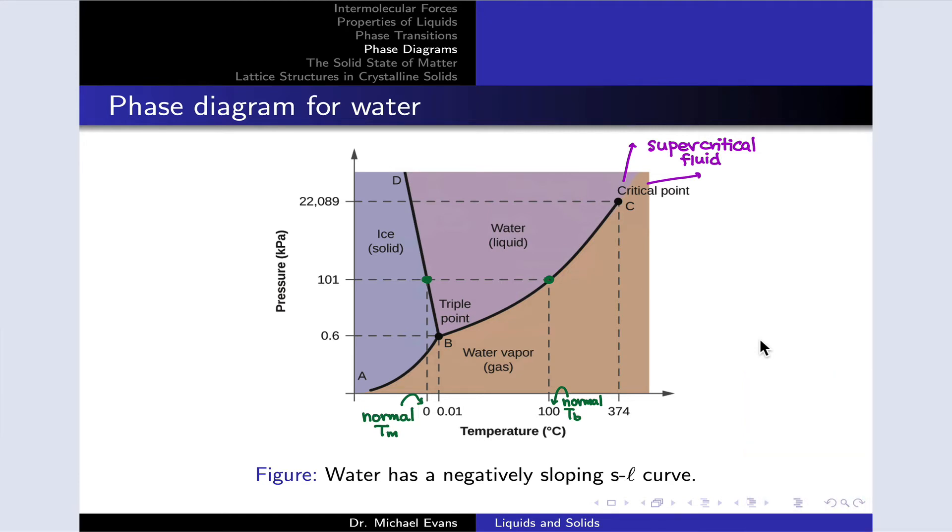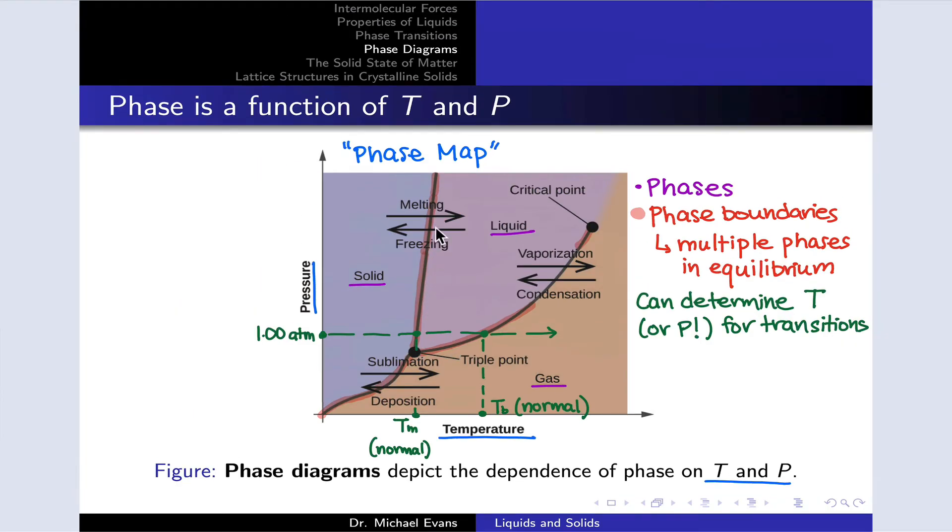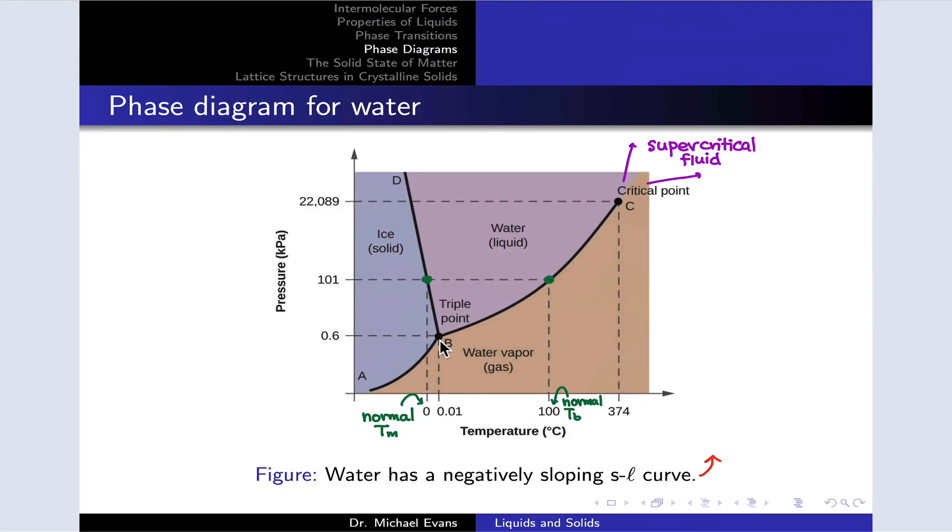We can do all the usual things with water's phase diagram in terms of determining temperatures of phase transitions. But one interesting thing about water in particular, which is not normal, is that the solid-liquid phase boundary has a negative slope—it slopes backwards. What's much more typical is for the solid-liquid phase boundary to slope in this direction. To understand why that is and what's so bizarre about this negatively sloping phase boundary, let's think about its implications.